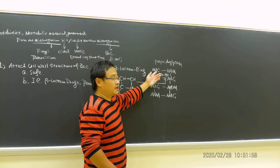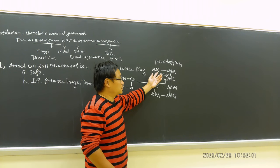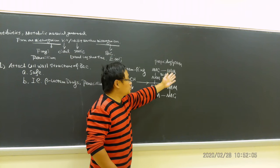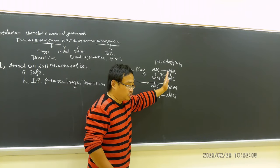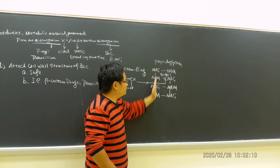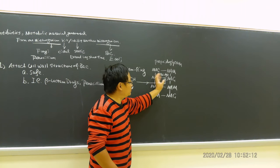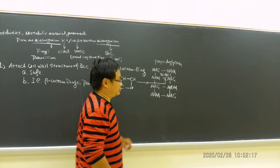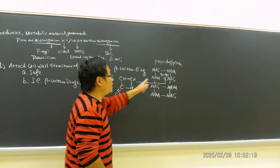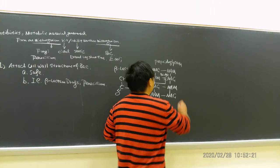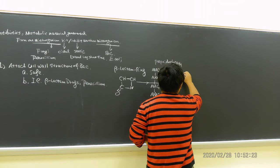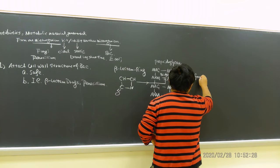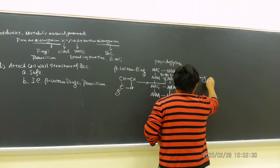They are attacking the cross-link between the two peptidoglycan chains, the bridge that links to form peptidoglycan. NAG is N-acetyl-glucosamine and NAN is N-acetyl-muramic acid. Those are two modified sugars cross-linked with each other.